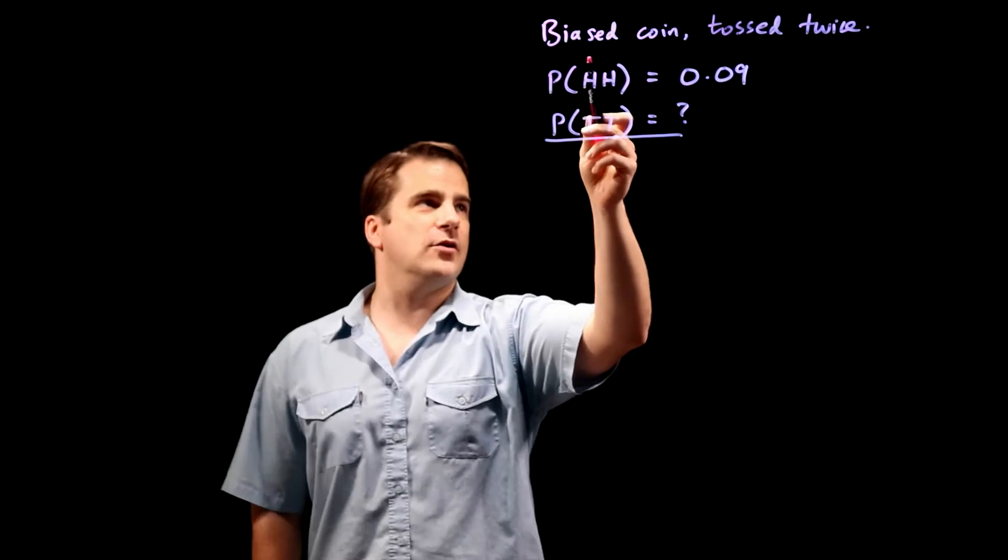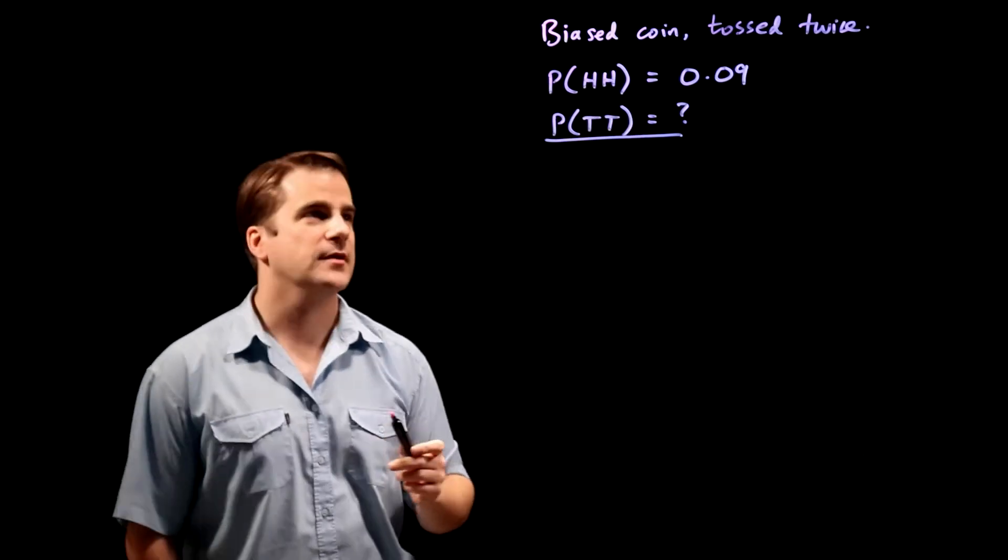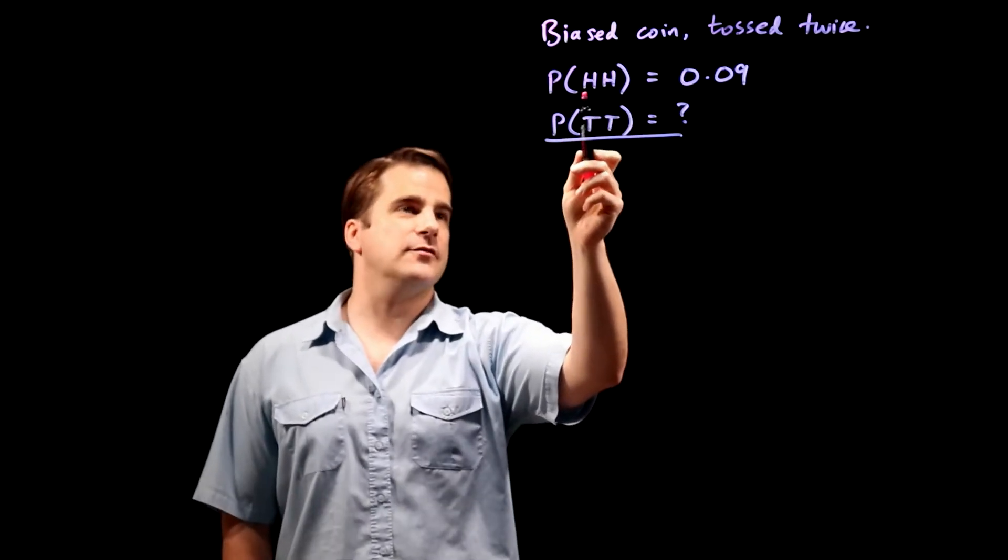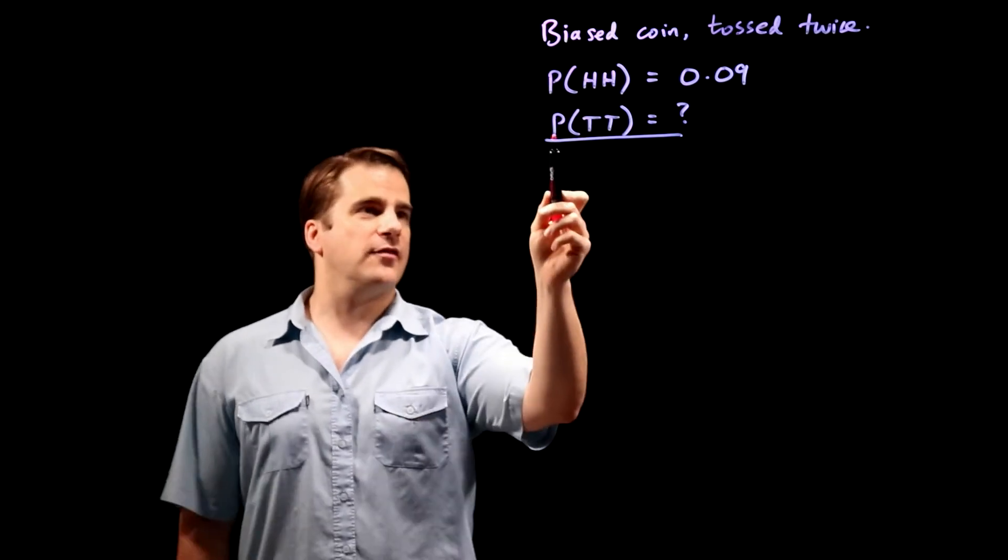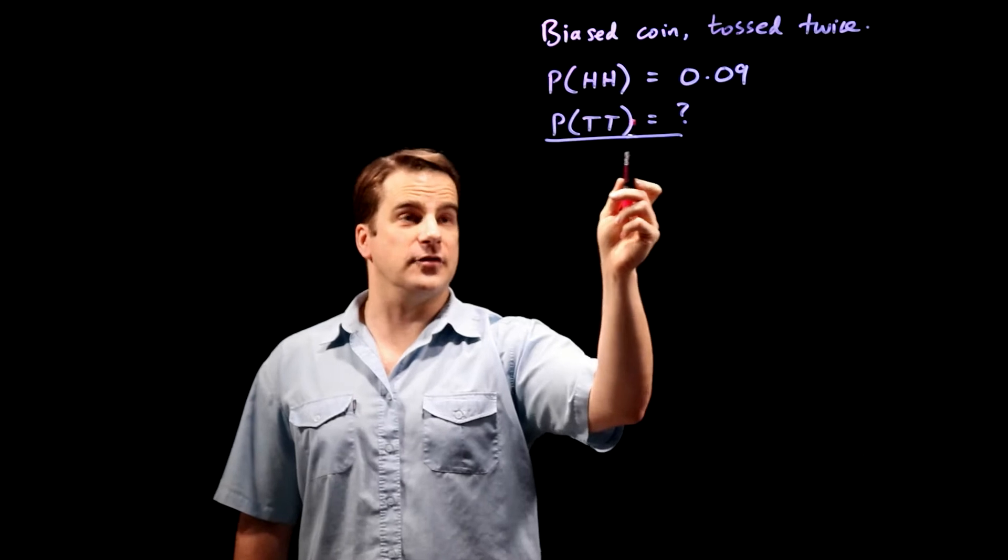Okay, we've got a biased coin and it's tossed twice. We're told that the probability of two heads is 0.09 and we have to find the probability of getting two tails.